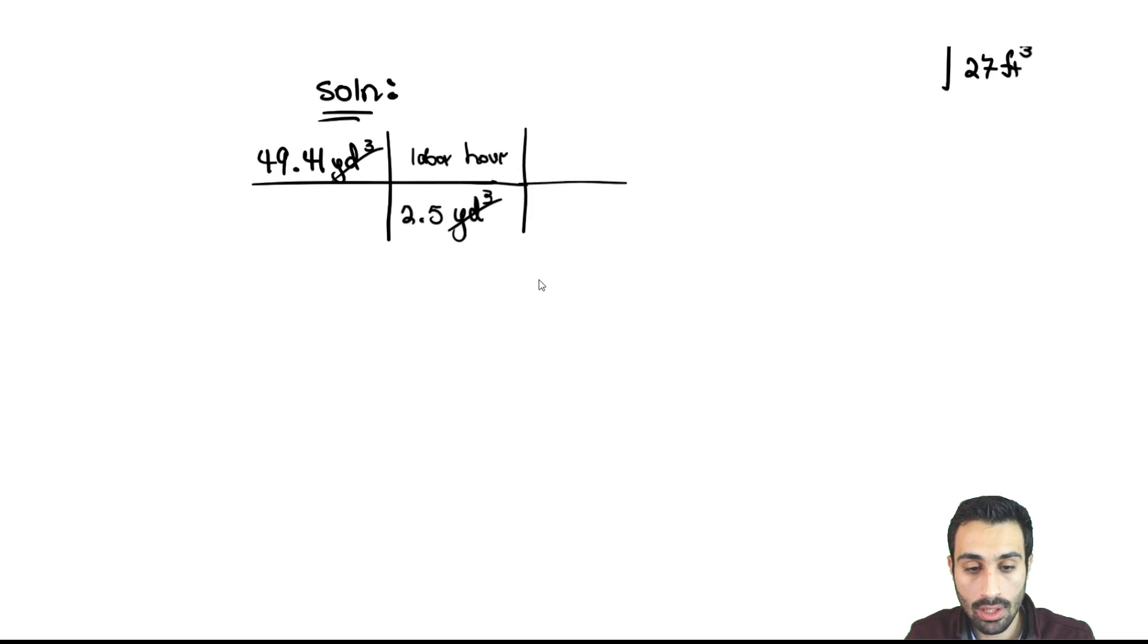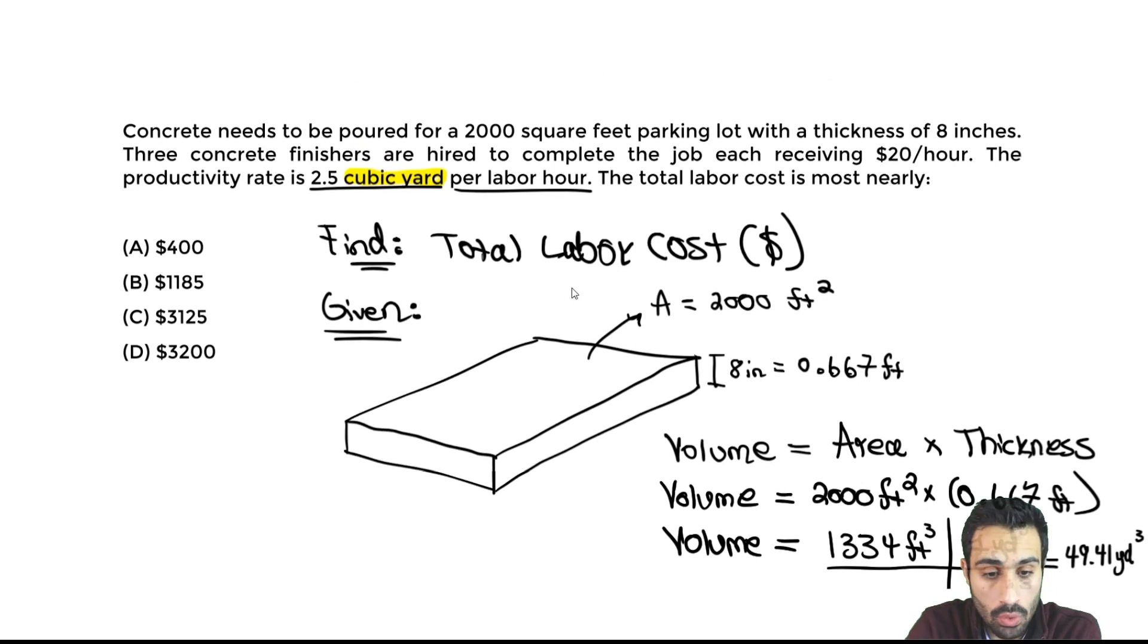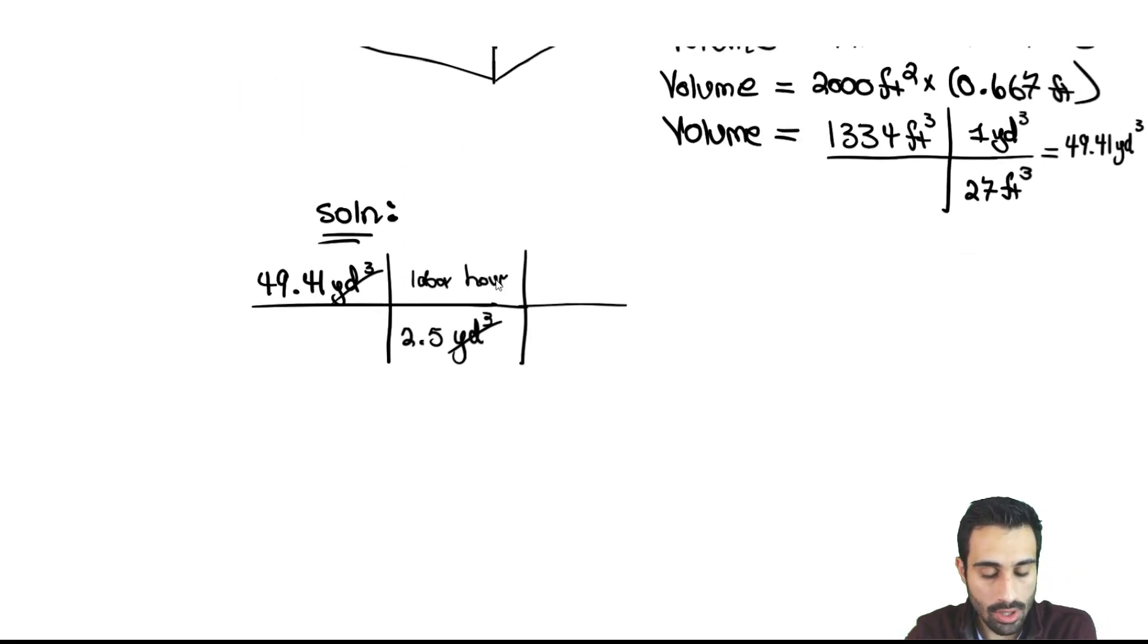Now we have hour on top. We already took care of the area and thickness. The last two numbers: we have three concrete finishers, that's often forgotten, the number of people working. The concrete finishers are doing all the work. We have three people doing that. Also, we have the hourly rate they each receive: $20 per hour. So hour's on top, so hour has to be on bottom. When you pay someone $20 per hour, it's a labor hour. So it's going to be $20 on top per one hour or per hour. These cancel.